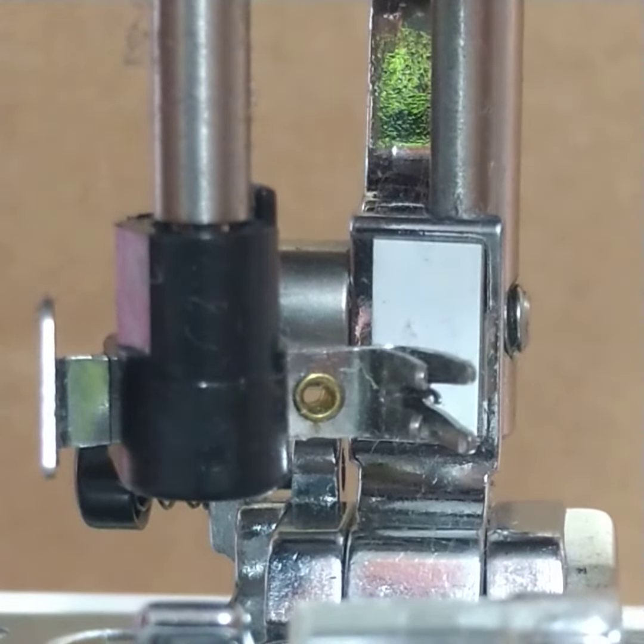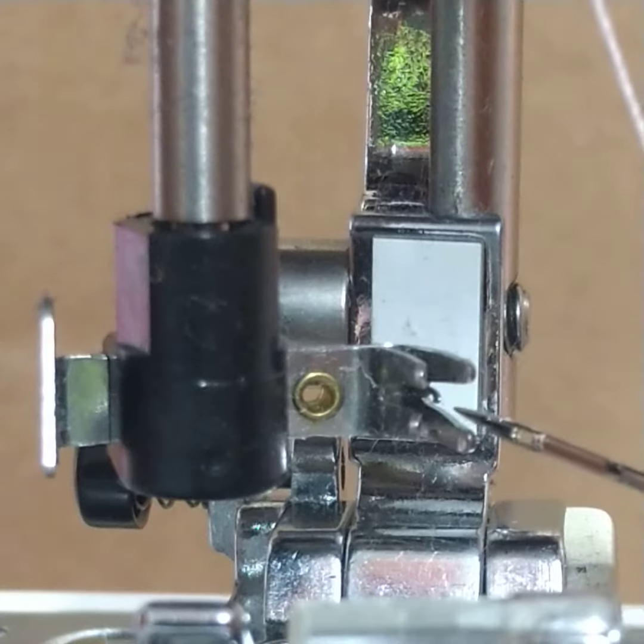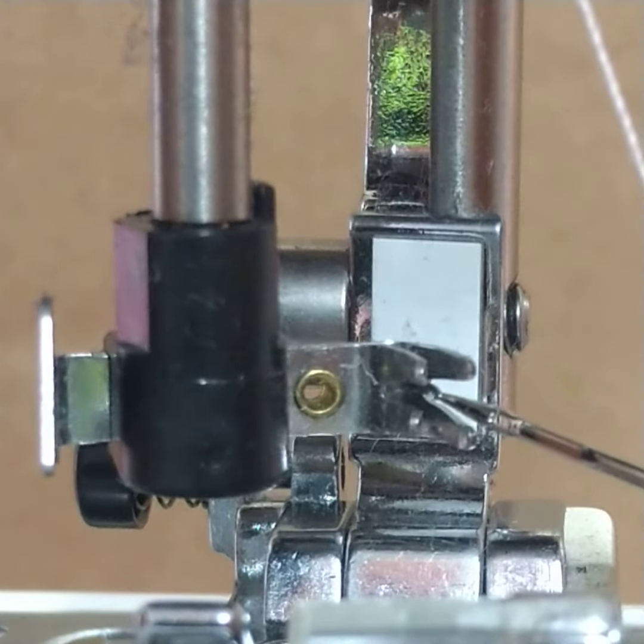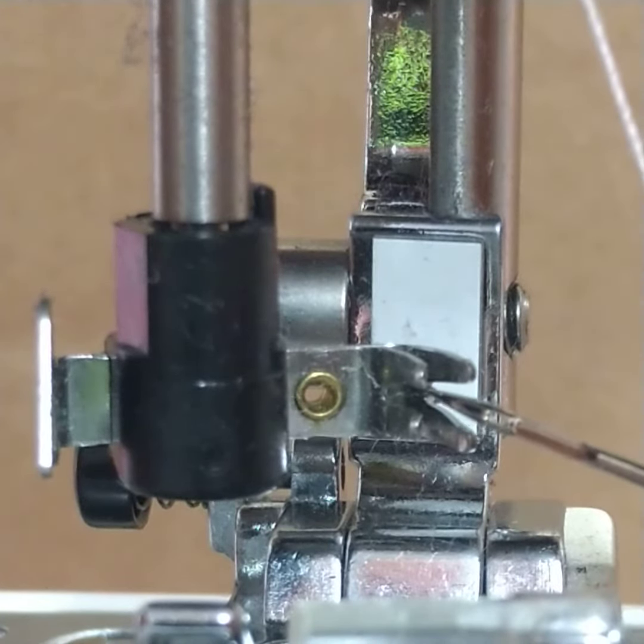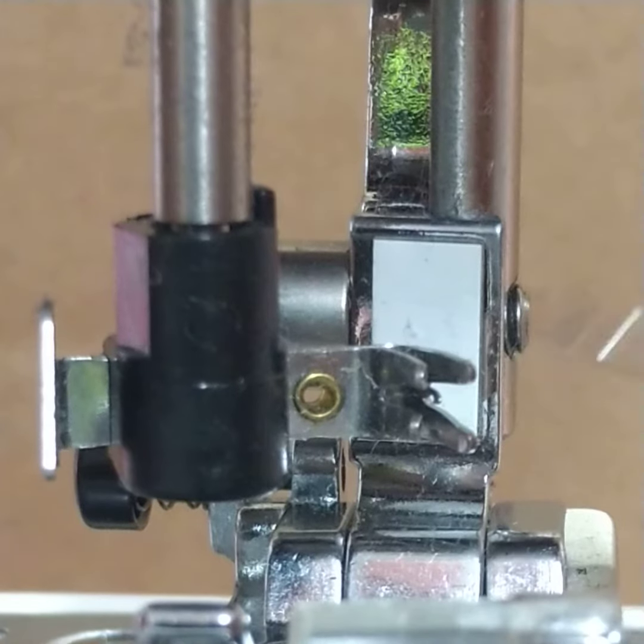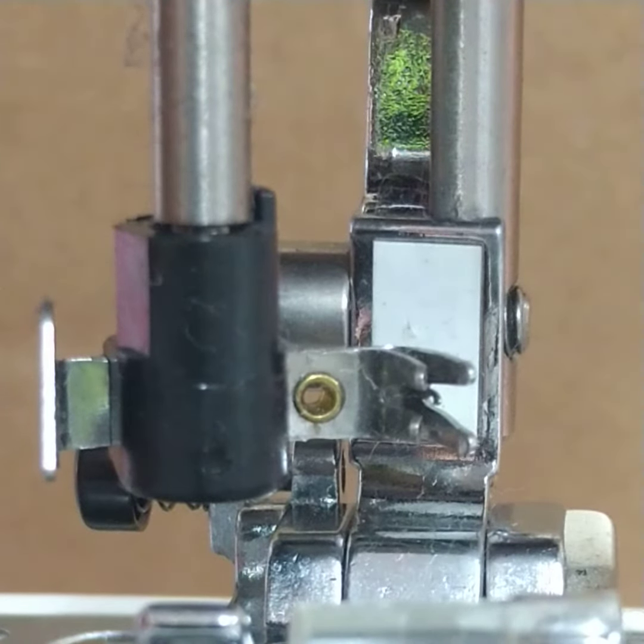As you know, the threader comes down and spins round, and it's that little tiny hook that should line up with the eye of the needle. Now in your case, it's going down the right hand side.